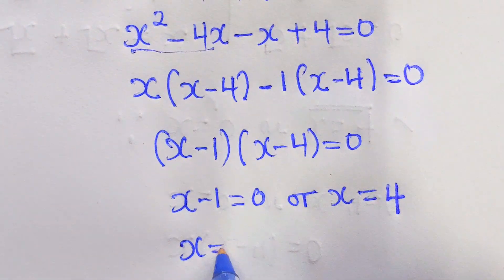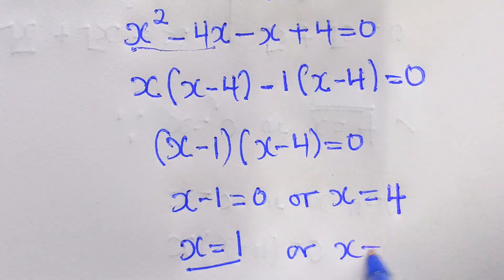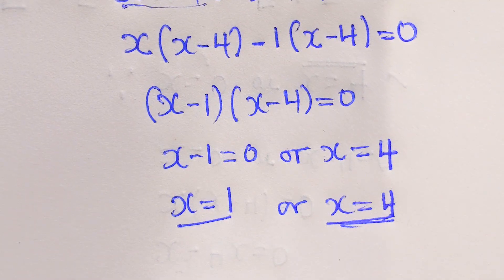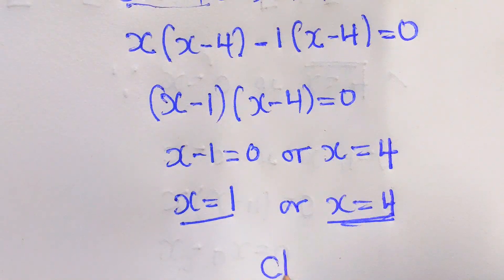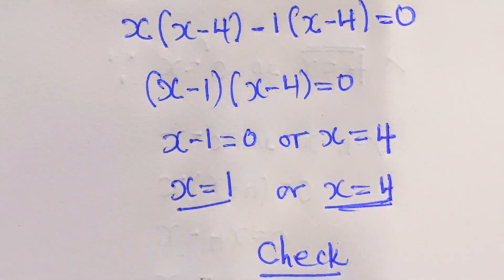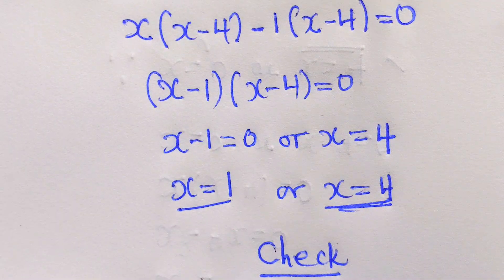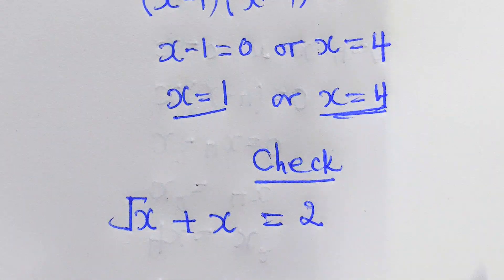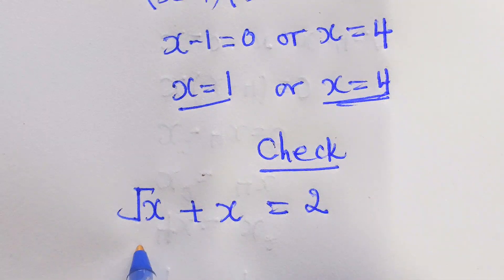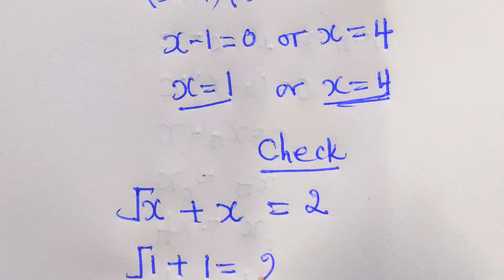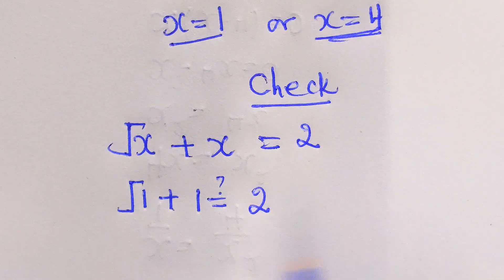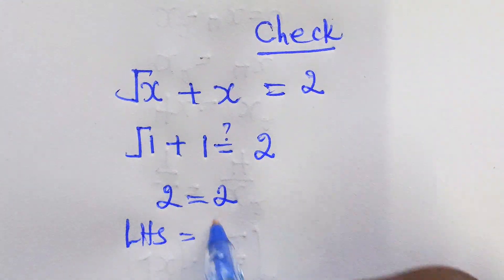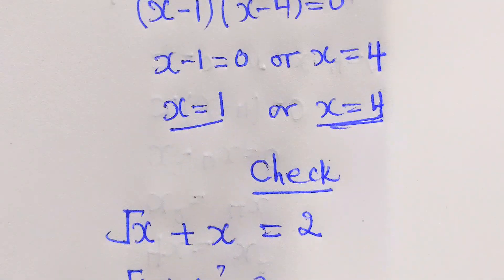So x here will be 1, or x equals to 4, as the value of x. But here, we have to check if our answers are correct. By writing what we have given: square root of x plus x equals to 2. By replacing 1, we have square root of 1 plus 1 equals to 2? And 1 plus 1 equals to 2 — left-hand side equals right-hand side. This value is correct.